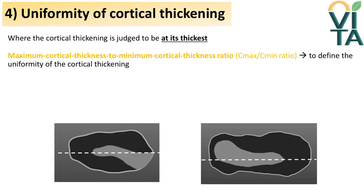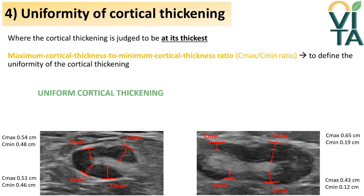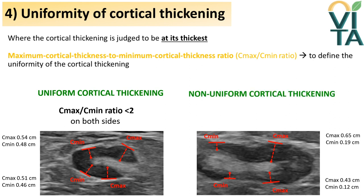Subsequently, the uniformity of cortical thickening can be assessed through the ratio between maximum and minimum cortical thickening, the so-called Cmax-Cmin ratio, scanning the lymph node along its long axis. Measurements are taken on the same plane for cortical thickening assessment, perpendicular to the surface of the nodal outer contour, from the capsule to the corticomedullary interface, and repeated on the other half. Uniform cortical thickening is defined as Cmax-Cmin less than 2 on both sides, while non-uniform is defined as Cmax-Cmin equal to or greater than 2 on at least one side.